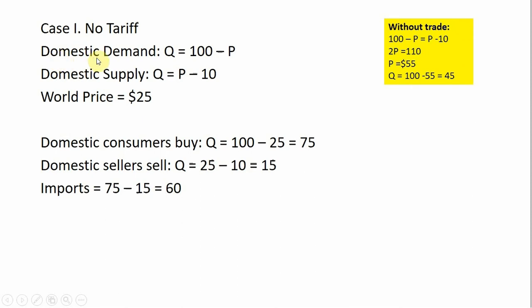Domestic consumers have a demand given by Q equals 100 minus P. Domestic firms have a market supply given by Q equals P minus 10. And the world price is $25. Without trade, the domestic market would have an equilibrium price of $55, setting demand equal to supply, and an equilibrium quantity of 45.